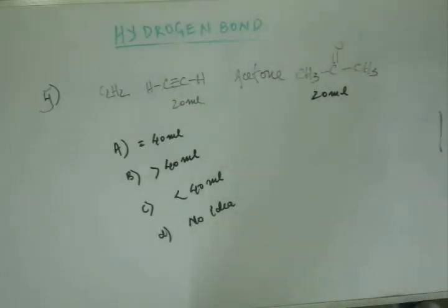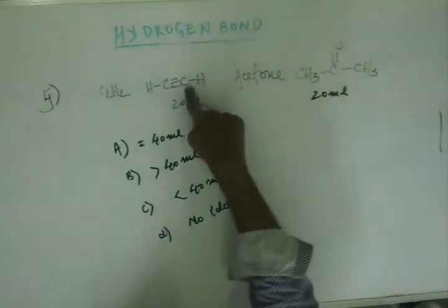Now, which case it would be? Here, do we have hydrogen bond? Do we have hydrogen bond in acetylene? Hydrogen bond is there when you have hydrogen attached to fluorine, oxygen or nitrogen. But there would be no hydrogen bonding.